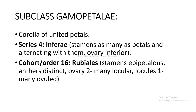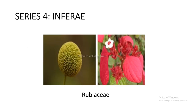This is subclass Gamopetalae, which means corolla of united petals. Series 4 Inferae: stamens as many as petals and alternating with them, ovary inferior. Cohort and order 16 Rubiales — stamens epipetalous, anthers distinct, ovary 2-many locular with 1-many ovules — includes Rubiaceae as shown in the figure.